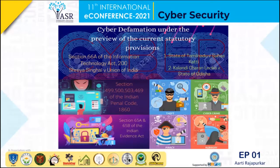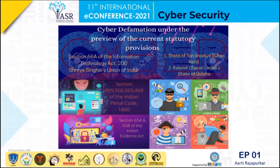The second precedent is Karandicharan versus State of Odisha. In this case, the petitioner was stalked online by the defendant and a fake account was created in her name with the intention to defame the petitioner. The High Court of Odisha held that the act of the accused falls under the offence of cyber defamation, and the accused was held liable through the means of fake, obscene images and text.